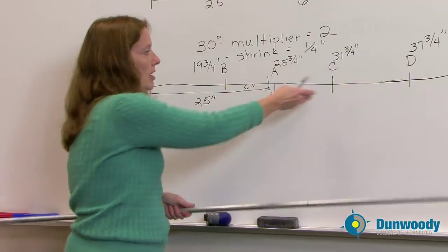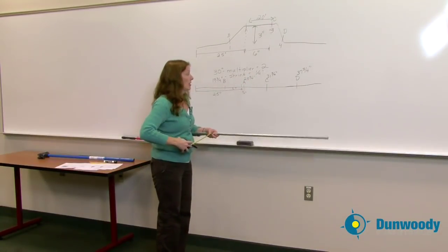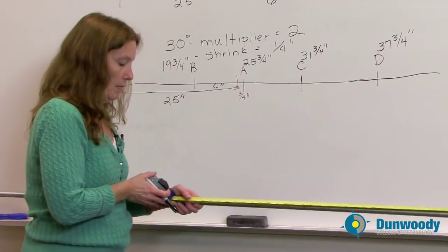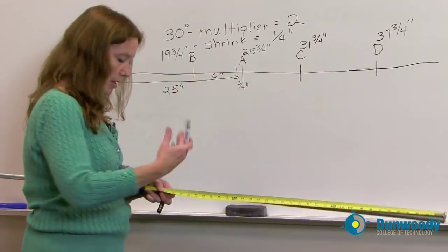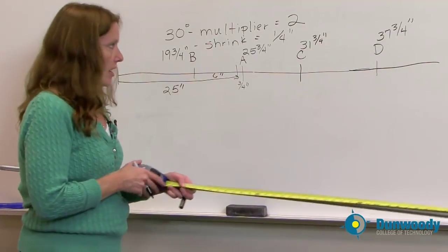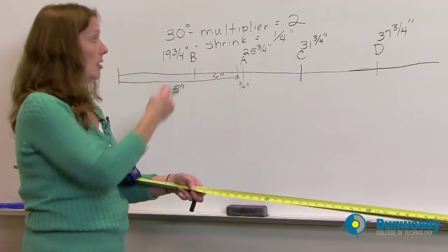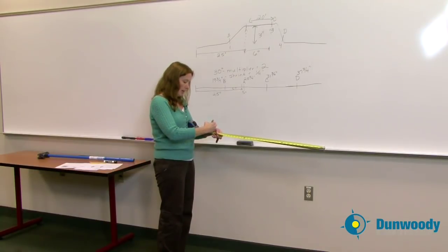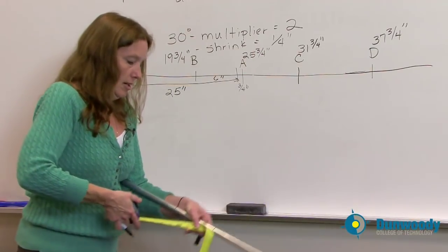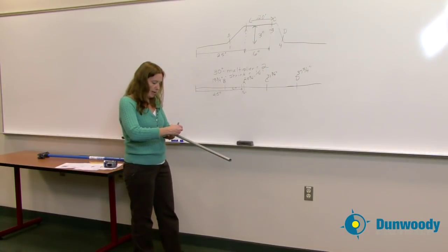My next mark is my C mark. We have a six inch obstruction, so I want to mark my C bend at thirty one and three quarters of an inch. And the last one — my multiplier is two times three, I get six — I'm going to mark that last one at thirty seven and three quarters of an inch. Same thing, I want to mark that pipe all the way around so I can keep track of where my marks are.